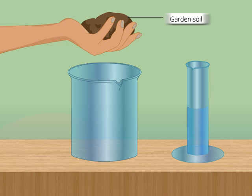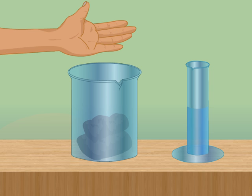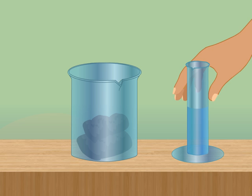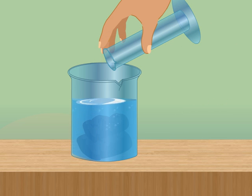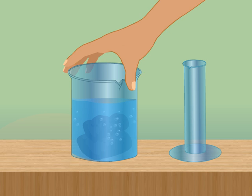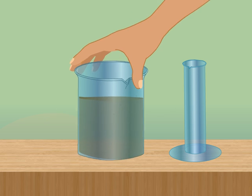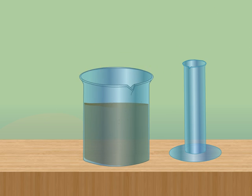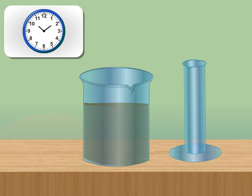Take a handful of garden soil and place it in a beaker. Add water into the beaker up to three-fourths part of it. Now shake the beaker so that soil properly mixes with water. Allow the mixture to settle down. Do not touch the beaker for at least 15 minutes.